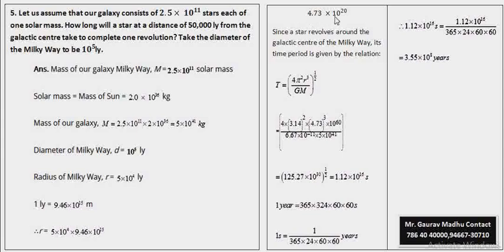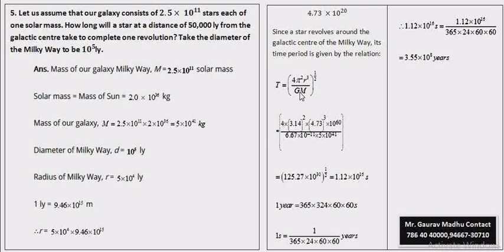इन को solve करके जो हमारे पास radius आएगा वो 4.73 x 10 raised to power 20 meter आ जाएगी। ये Kepler के तीसरे law के अंदर हमने formula derive किया हुआ है। जो time period होता है, वो होता है T² = 4π²r³ / (GM)। यहाँ r होता है radius of orbit, G होता है universal gravitational constant, M होता है वो mass जिसके around कोई planet घूम रहा होता है।